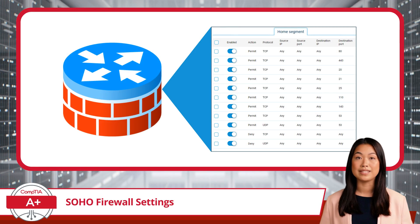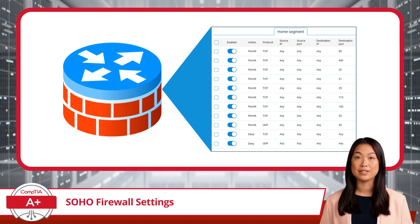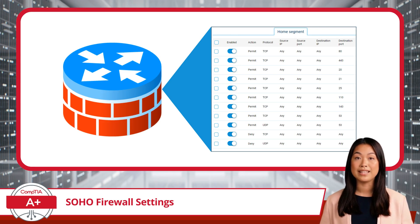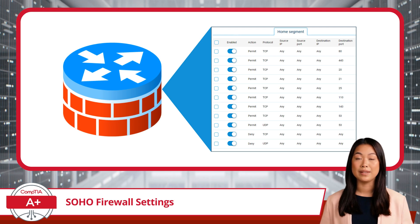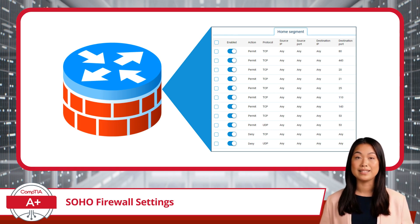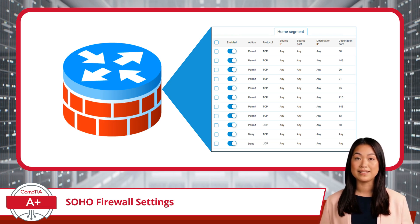First, we will talk about disabling unused ports. Ports are like virtual doors on your network that allow specific types of data in and out. If a door, or port, is open but not being used, it can become a security risk, as attackers might exploit it to gain unauthorized access. By disabling these unused ports, you're essentially closing those doors, tightening the security of your network and limiting access to only the essential traffic.